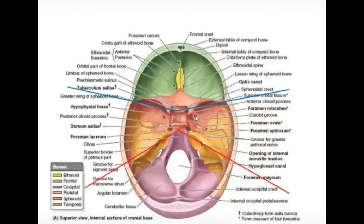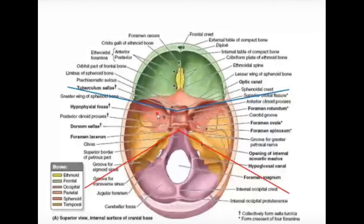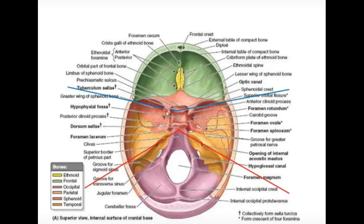I showed you in the last lecture — the norma basalis — this is the shape of the sphenoid bone. It is just like a butterfly: it has a body in the center, a lesser wing on the top, and a greater wing on the bottom. So the anterior cranial fossa posteriorly extends as far as the posterior border of the lesser wing of sphenoid.